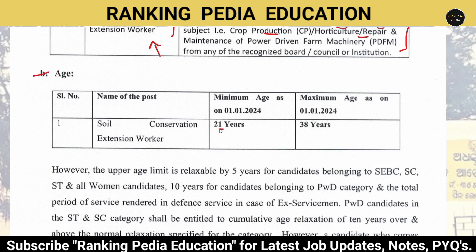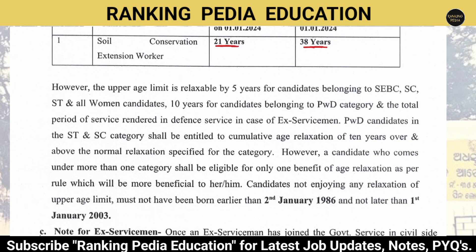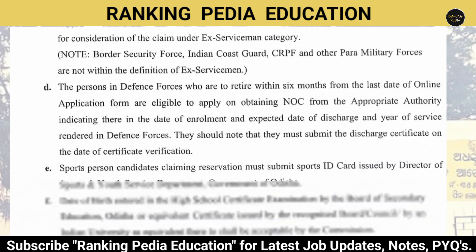The minimum age is 21 years and maximum is 38 years. Age relaxation of 5 years is provided for candidates belonging to SEBC, SC, HD, and all women categories. For PWD category candidates, 10 years of age relaxation will be provided.